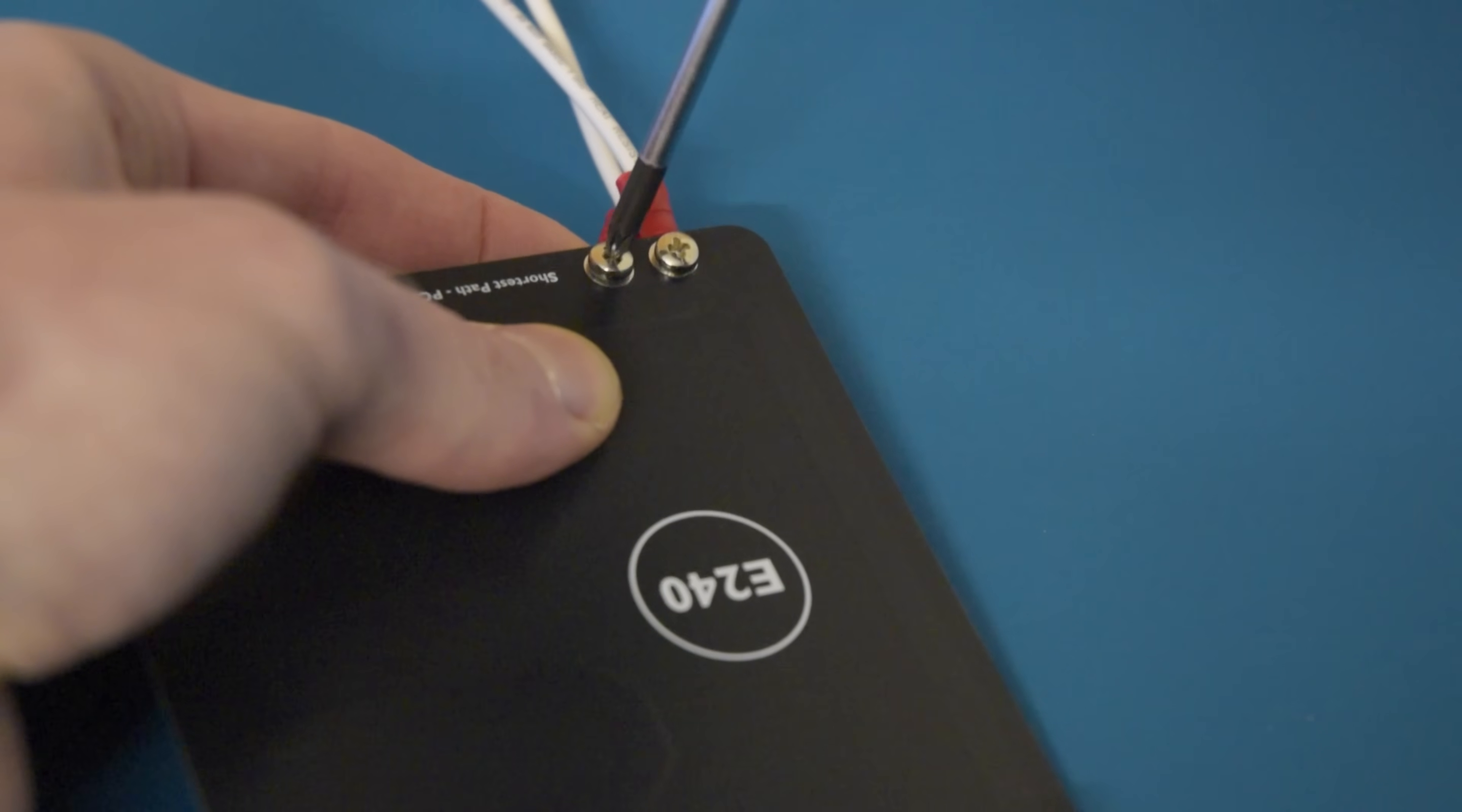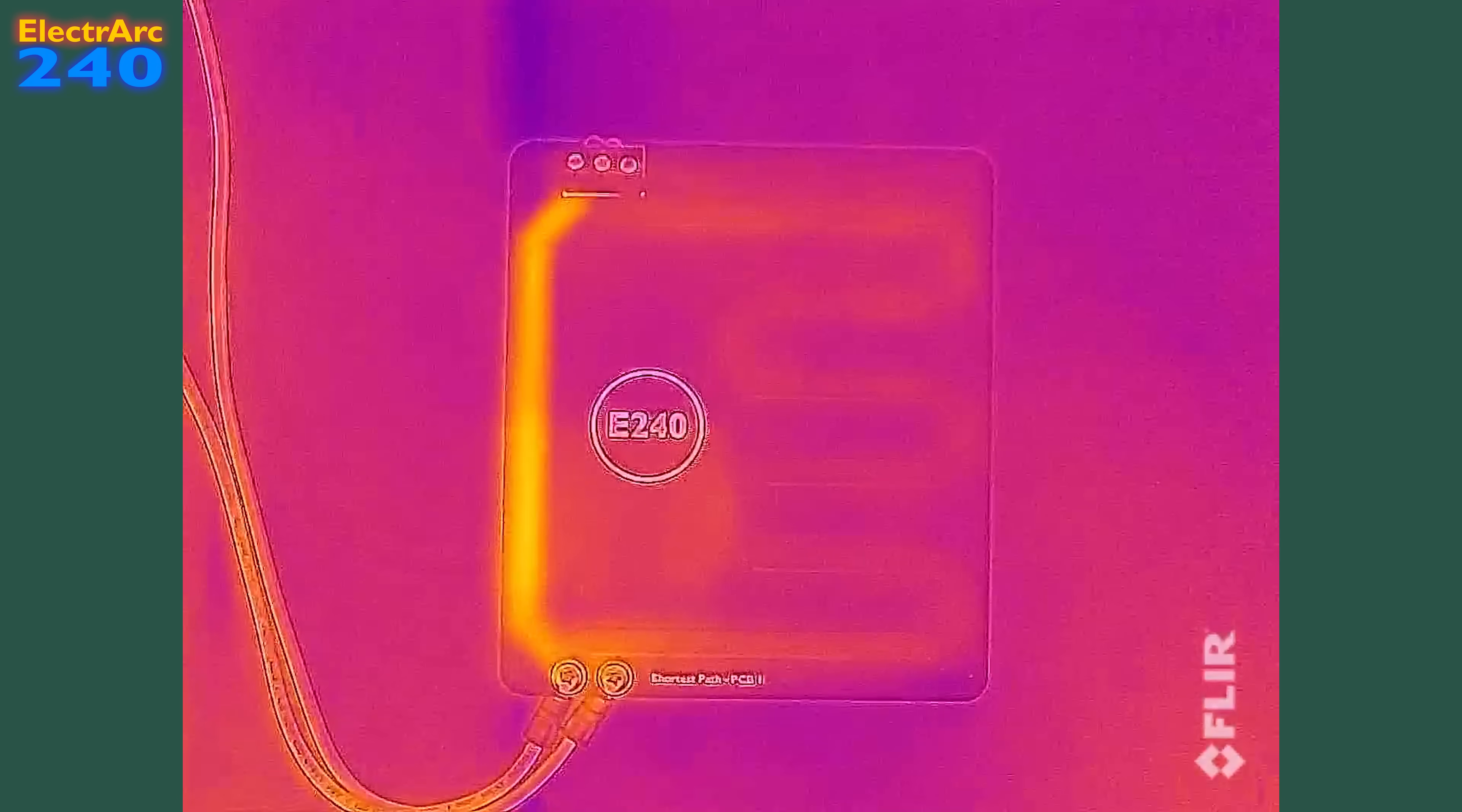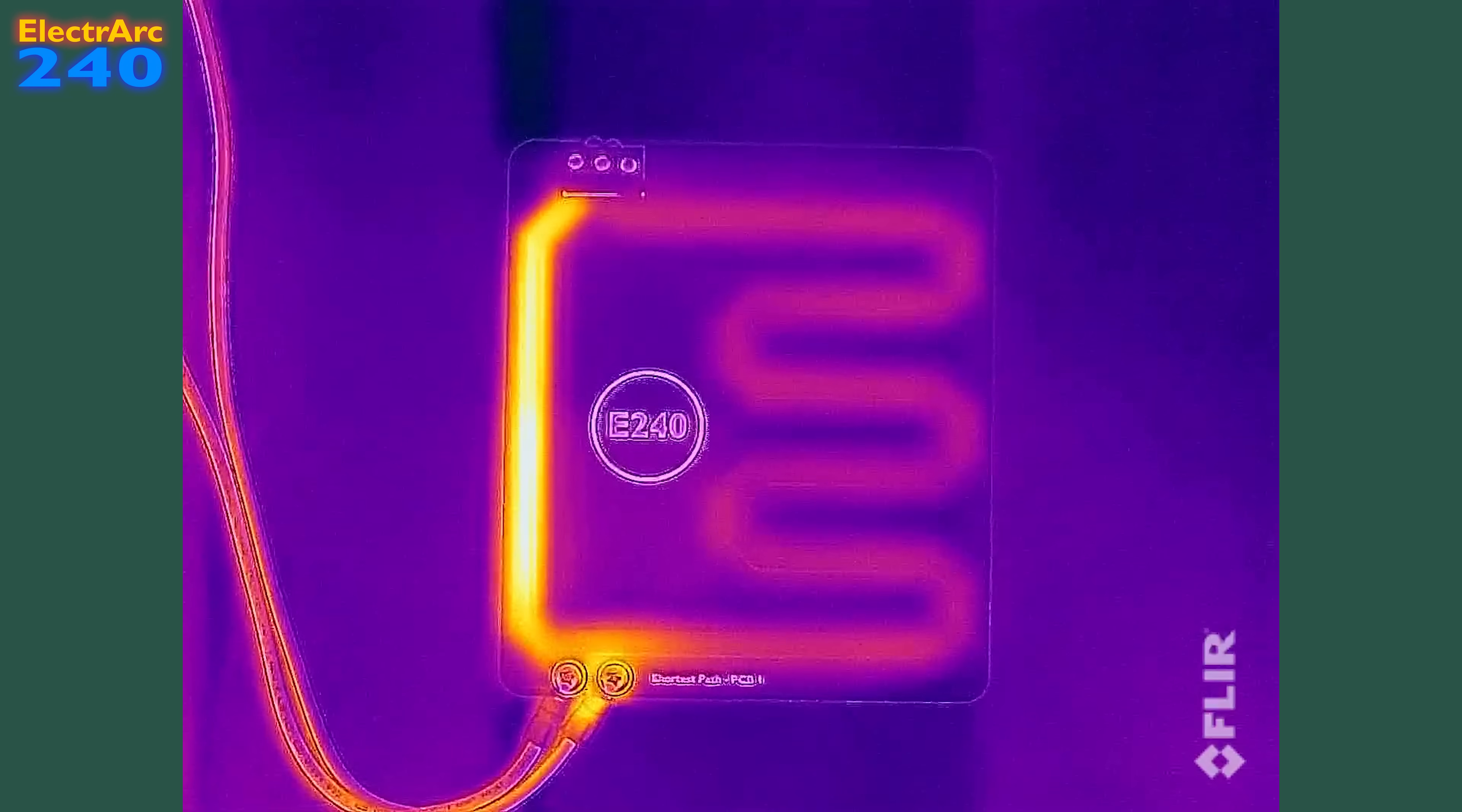If we connect a power supply across the circuit board and use it to force 10 amps through the two paths, we'd naturally expect the current to take the shorter path. Looking through the thermal camera, we can see that indeed the short trace is getting hotter because a greater proportion of the electricity is choosing that path, the path of least resistance.